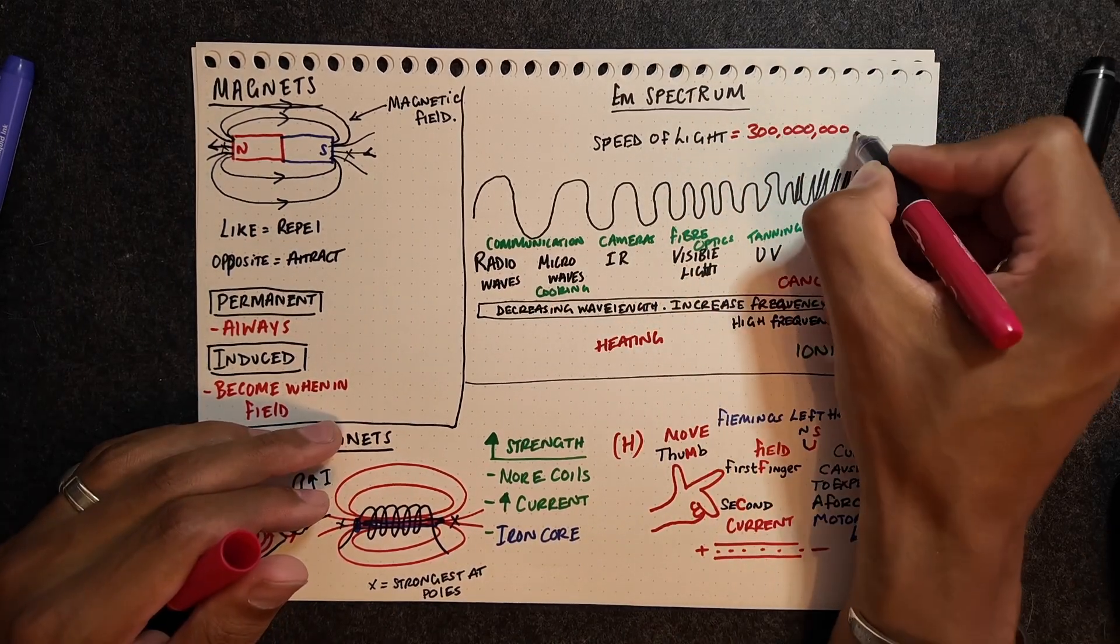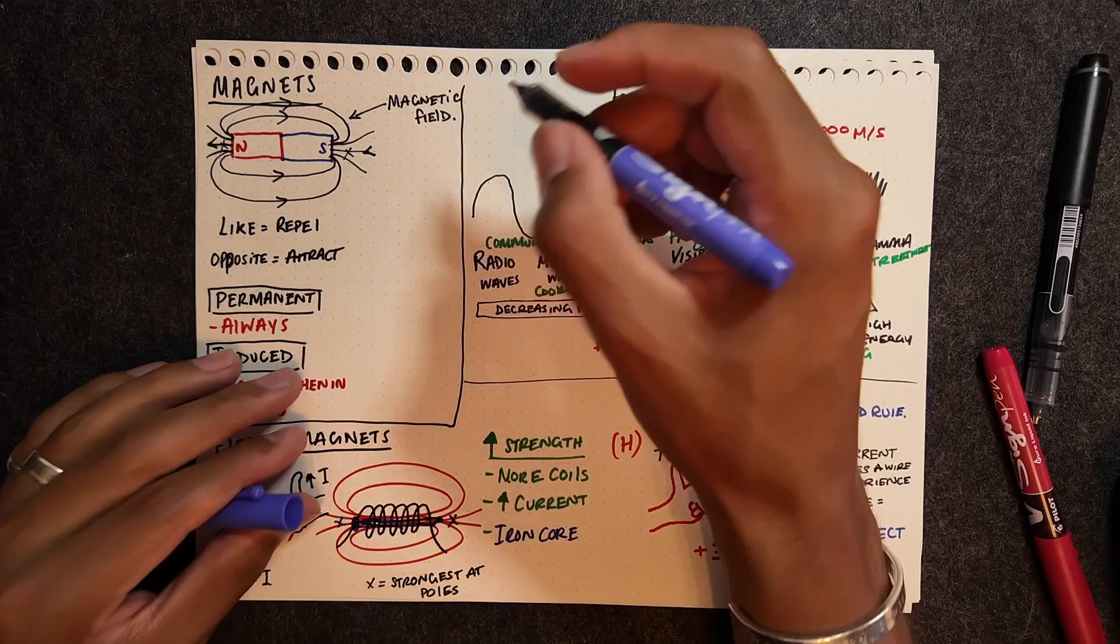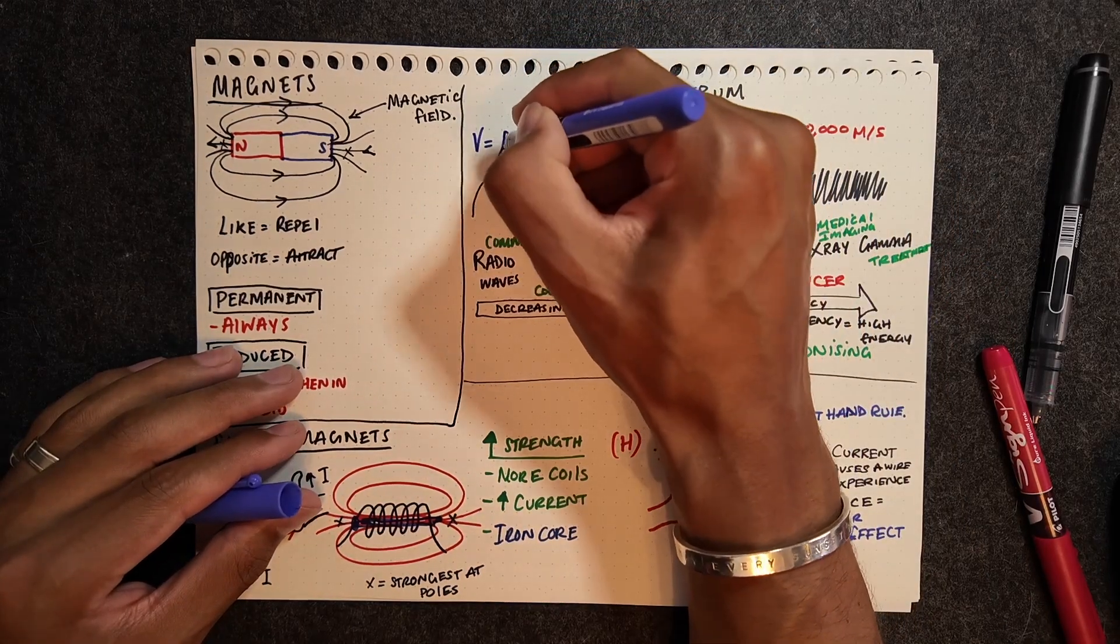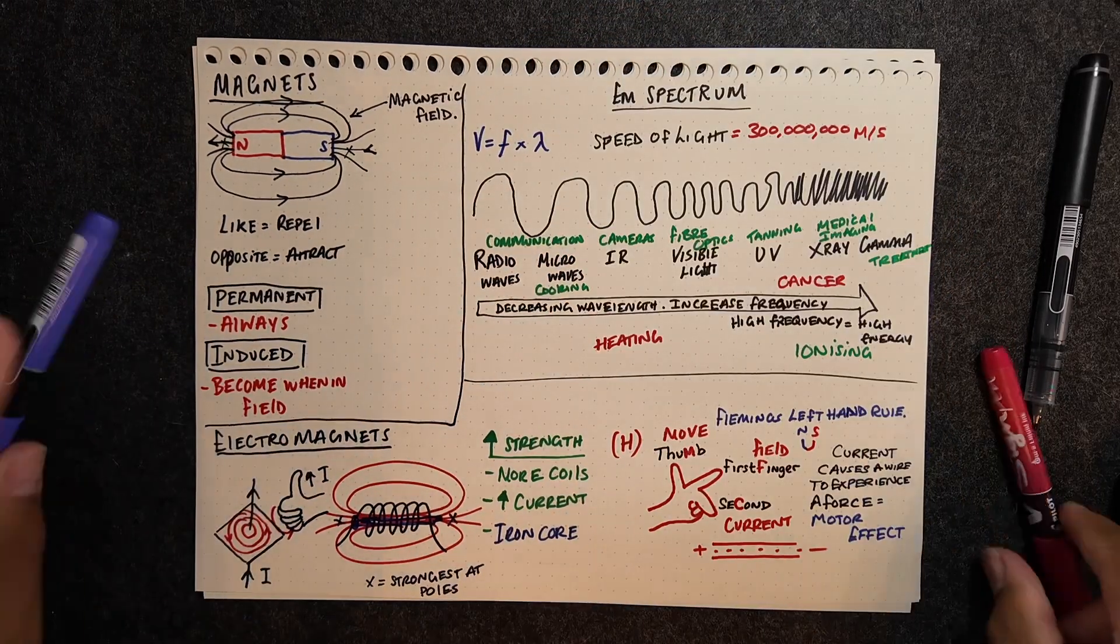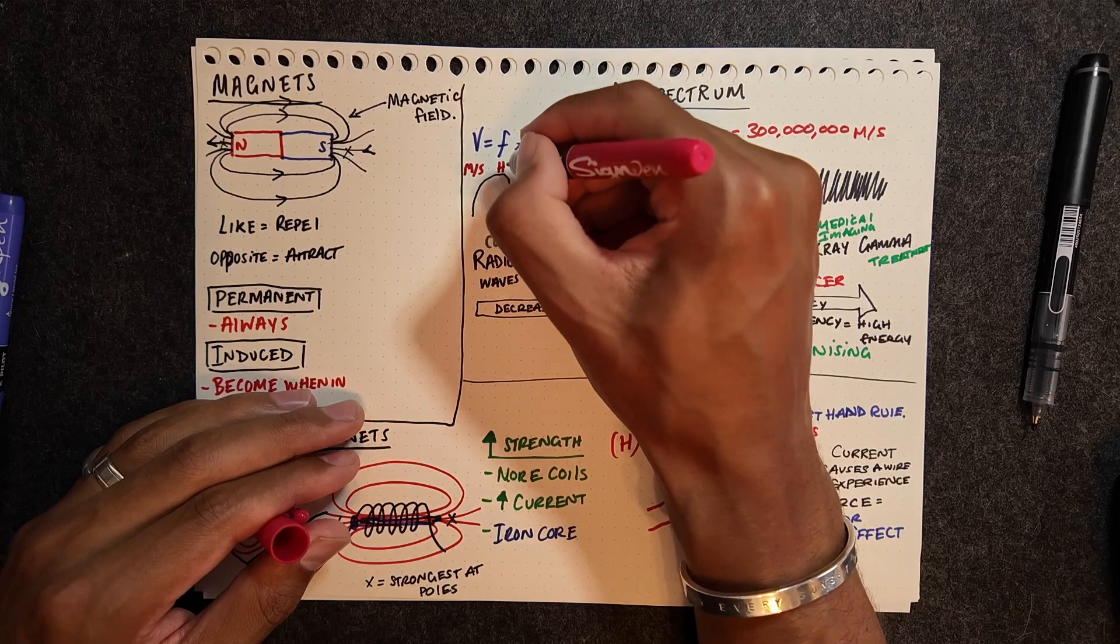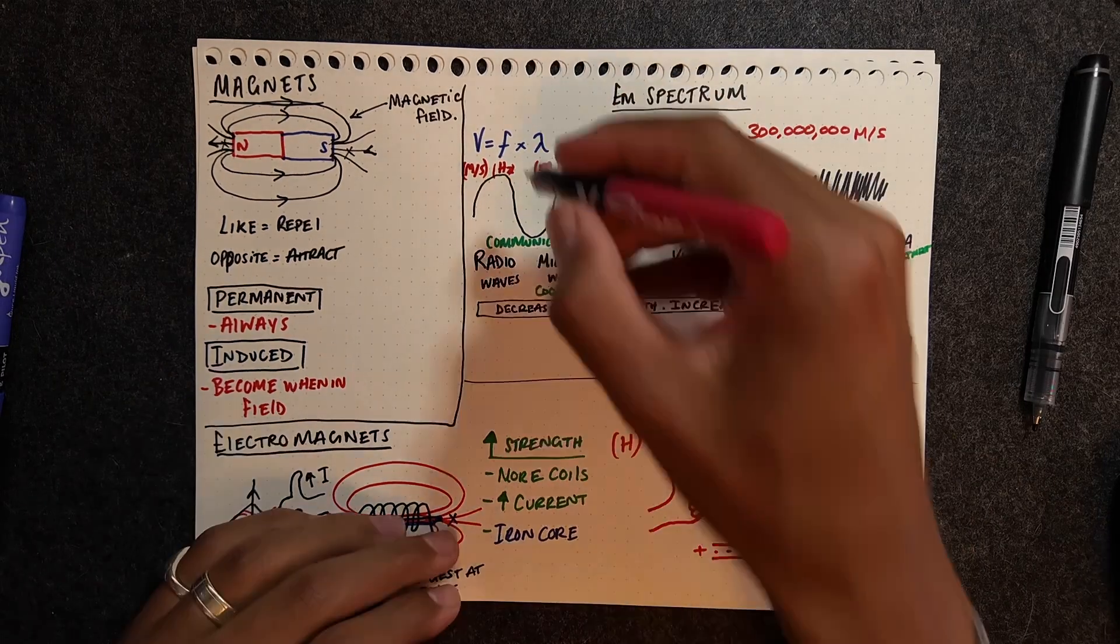All of these are traveling at the speed of light, at 300 million meters per second, which is the constant, and we should be confident with using the wave speed equation, which is V equals F times lambda.